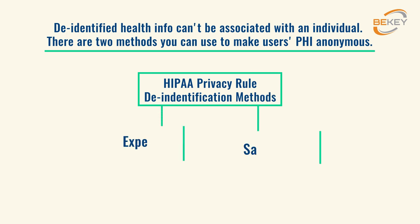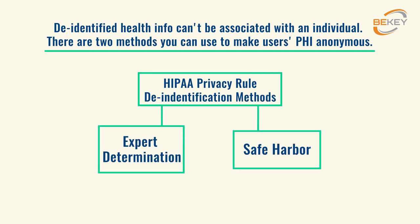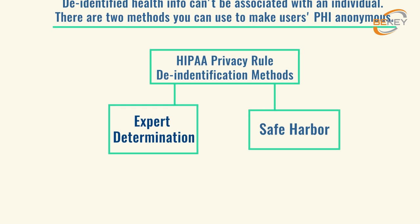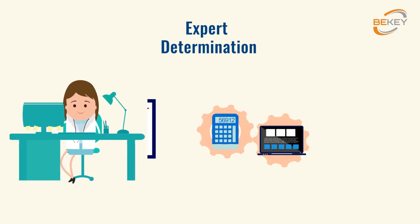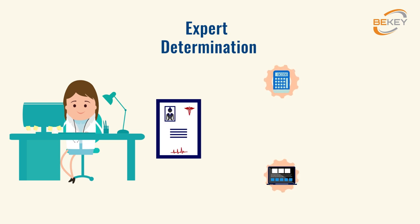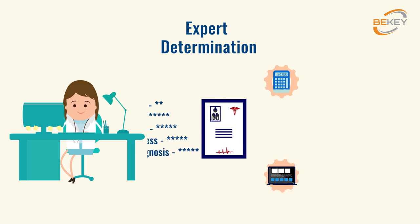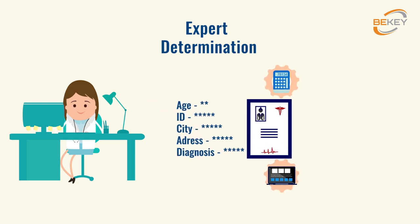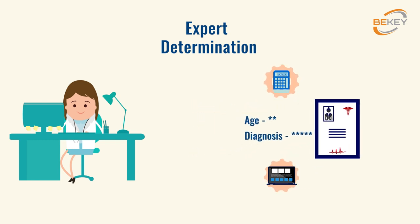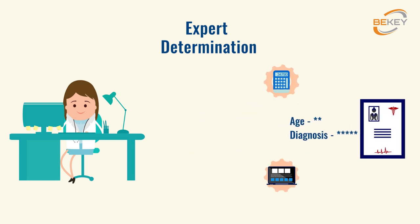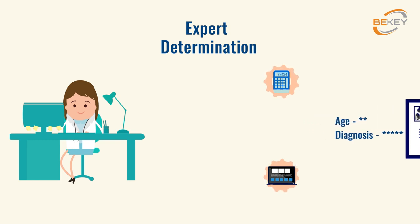In this video I'm going to describe two ways that will help you to de-identify your data. The first method is expert determination. In it you have to invite an expert in statistics or computer science. An expert has to render PHI through statistical and scientific methods to strip health info of any identifiable traits and write documentation that proves these data cannot be tailored to a person.